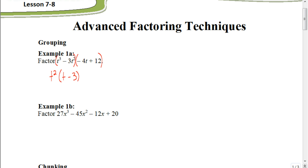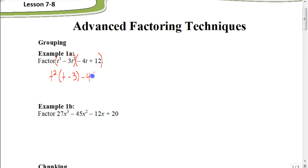Now let's look at the next pair. Anytime your first term is negative, you must include a negative when you factor it out — whatever sign the first number has tells you the sign when you factor it out. This is negative 4, so I'm going to factor out a negative 4. The greatest common factor between 4 and 12 is 4, so we factor out negative 4. Factoring negative 4 from negative 4t leaves just t, and 12 divided by negative 4 is negative 3.